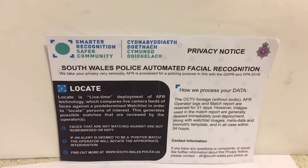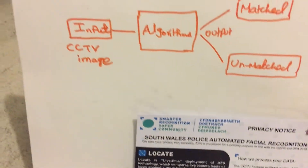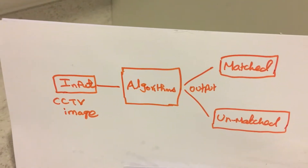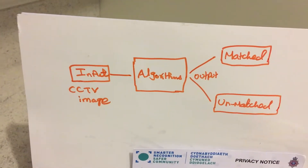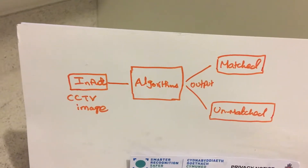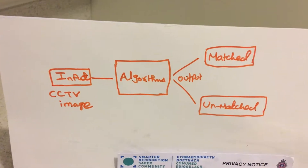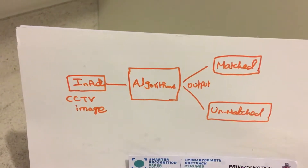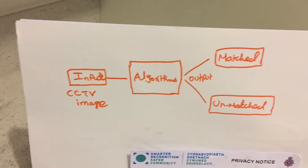It was quite interesting to see how AI and big data are helping the police department as well. So I did a small drawing — you can see this flowchart. There is a CCTV image as the input, then the algorithms — data structures, algorithms, and artificial intelligence — are applied, and the output is a matched list and an unmatched list.